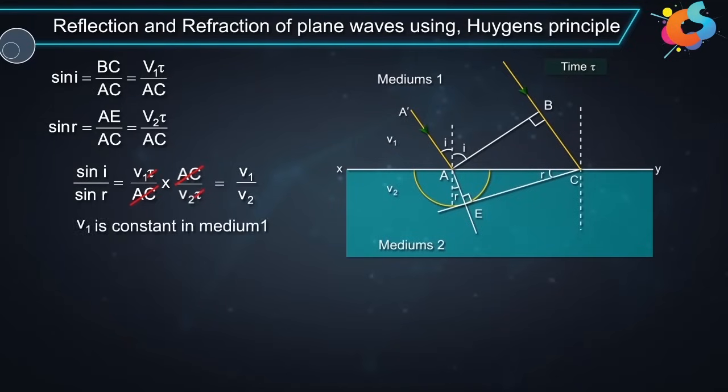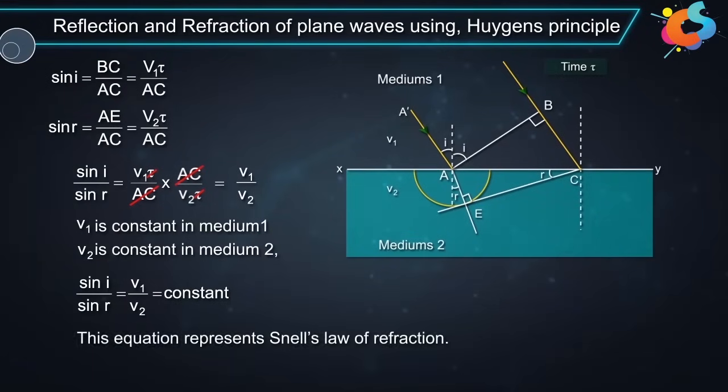Since V1 is constant in medium 1 and V2 is constant in medium 2, we have sin I by sin R is equal to V1 by V2 which is equal to a constant. This equation represents Snell's law of refraction.